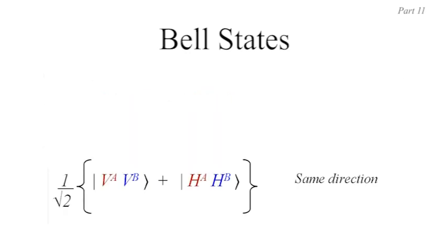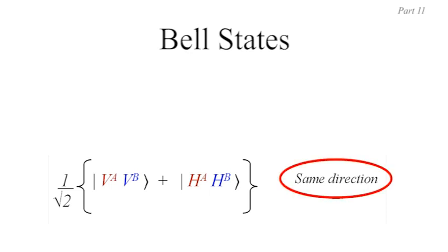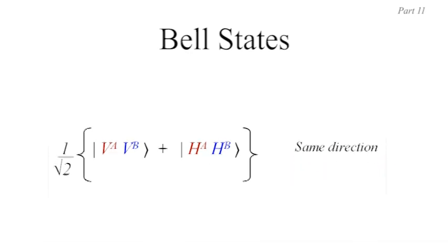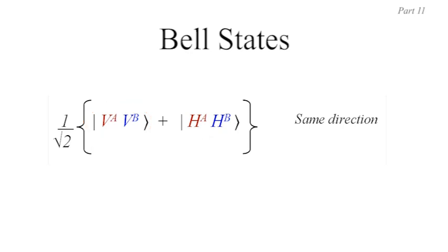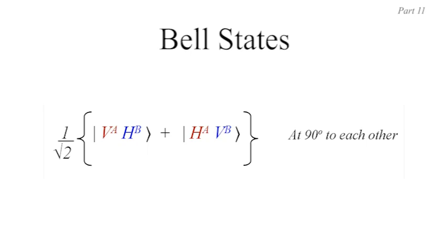This means that however you position the filter for the measurement of photon A, the state will collapse after measurement so that photon B has exactly the same direction of polarization as A. The second Bell state expression, and its negative counterpart, applies to two entangled photons where polarizations are in the same direction, and this is the type we will use in our Bell test experiment. For example, if a filter in any given direction is used on photon A and the photon gets through, the polarization of A is in that direction, and the state collapses so that photon B also has polarization in that direction.